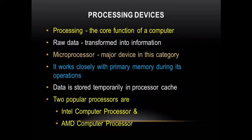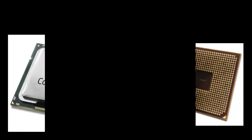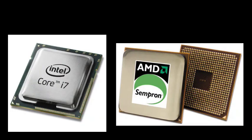Now, the different types of processors. Since the processor handles all kinds of information, choosing the right processor is probably the most important thing when buying a computer. Two popular processors are the Intel computer processor and the AMD computer processor.